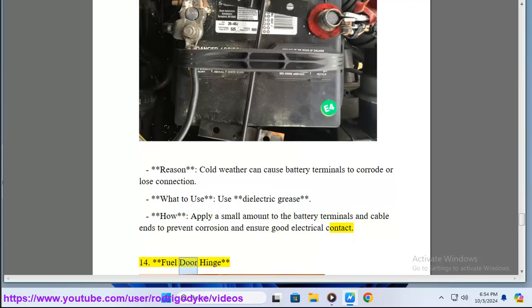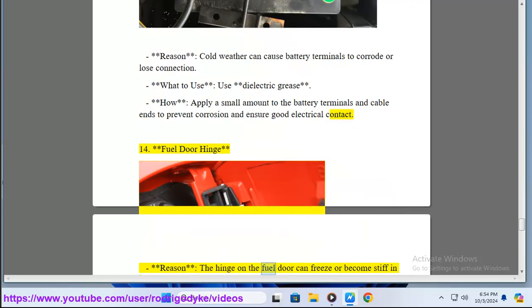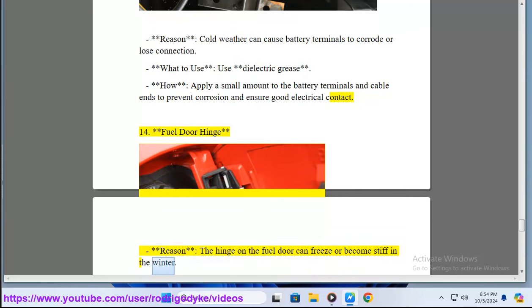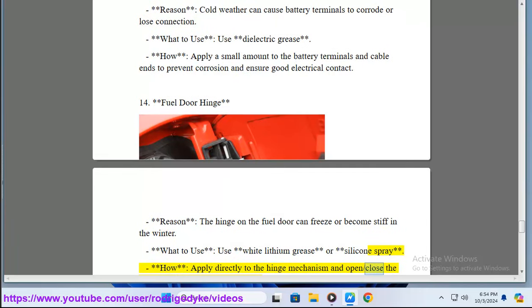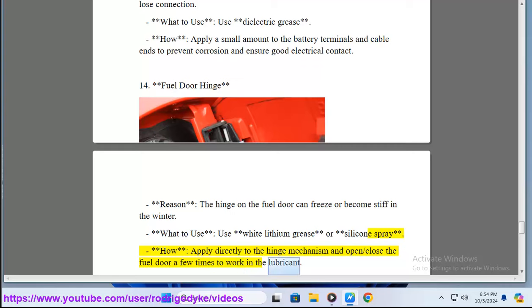14. Fuel Door Hinge. The hinge on the fuel door can freeze or become stiff in the winter. What to use? Use white lithium grease or silicone spray. How? Apply directly to the hinge mechanism and open/close the fuel door a few times to work in the lubricant.